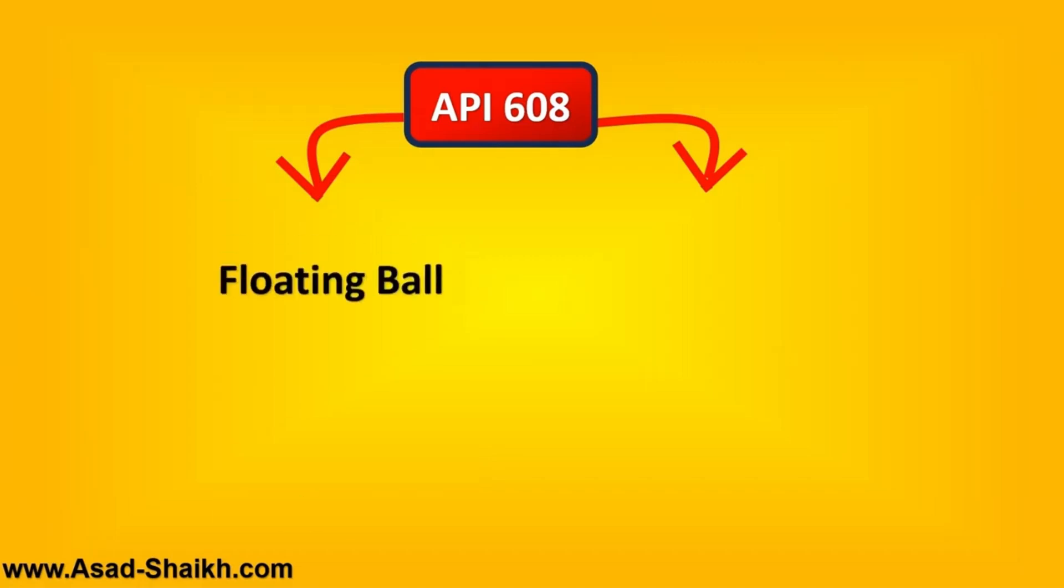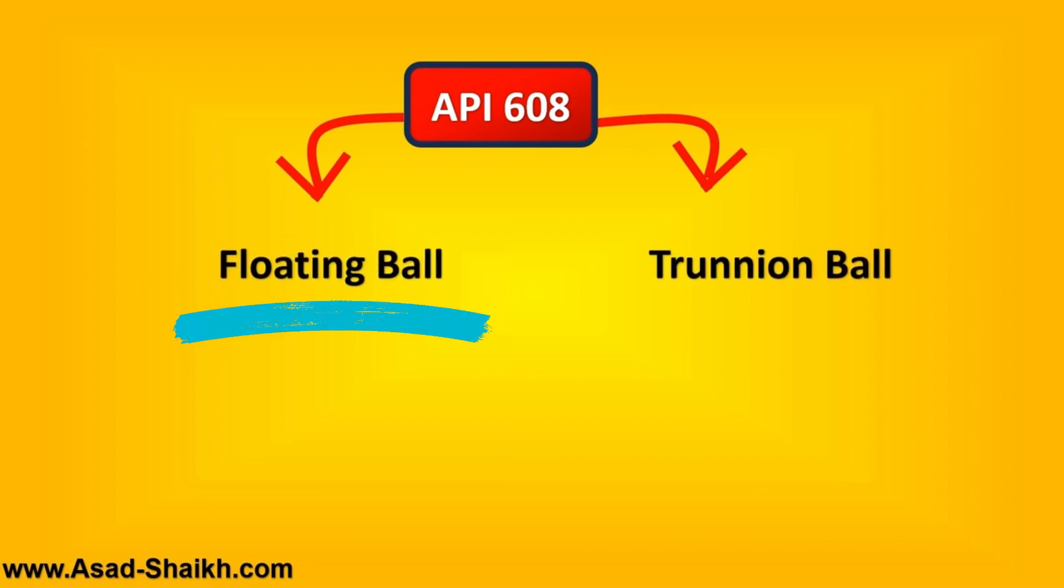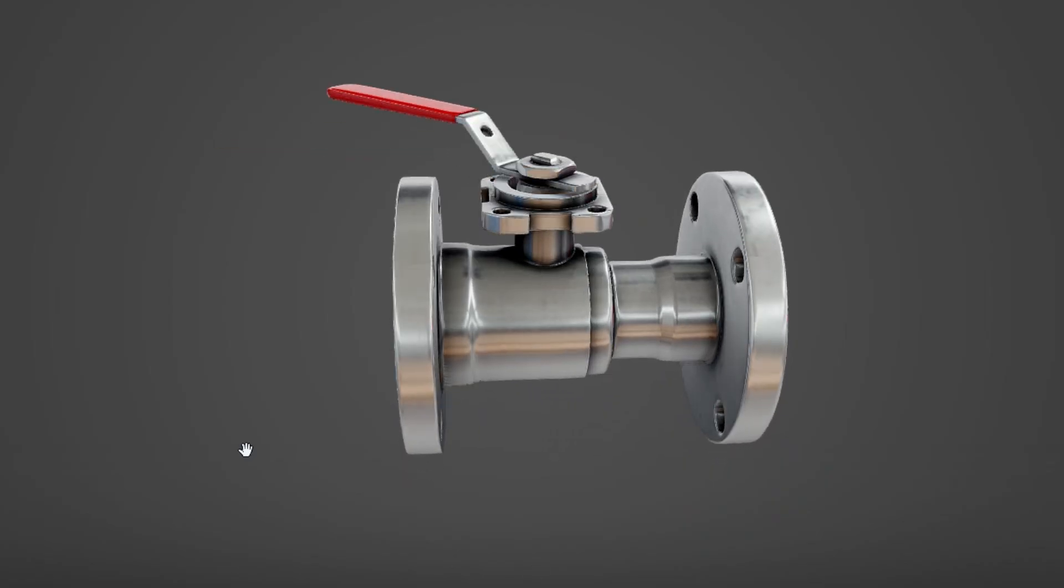API 608 and API 700 is for ball valves. If you see here it is divided into two important categories, which is floating ball valve and trunnion ball valve. Let us try to understand both of these types.